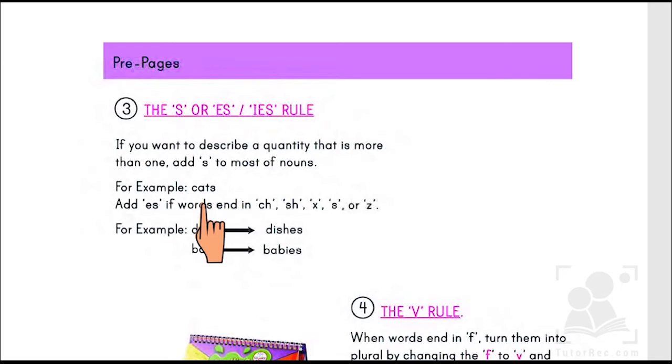But if the word ends on any of these elements such as CH, SH, X, S or Z, what we are supposed to do is we are supposed to add ES at the end of the word such as dish, dishes, baby, babies. However, we need to remove Y to make it plural and to add I instead of Y.